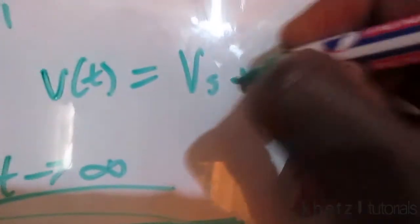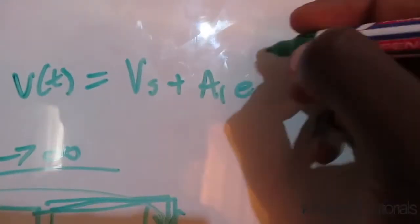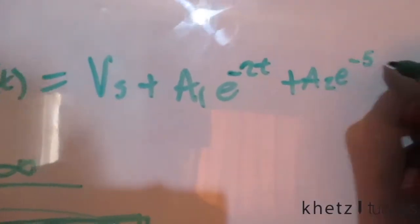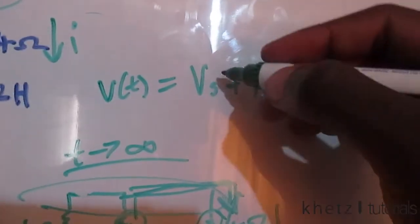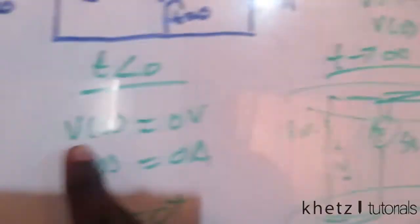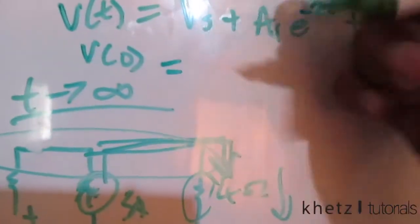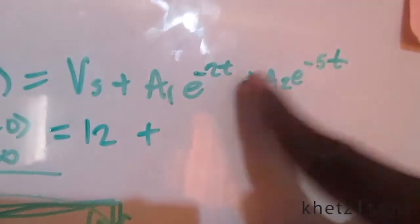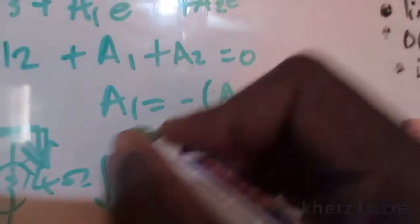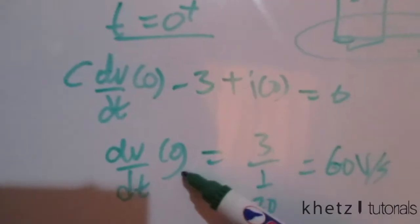For the total response, v(t) = Vs + A₁·e^(−2t) + A₂·e^(−5t), where Vs = 12 V. Applying the initial condition v(0) = 0: 12 + A₁ + A₂ = 0, so A₁ = −A₂ − 12. This is our first equation. We also use dv/dt(0) = 60 as the second condition.